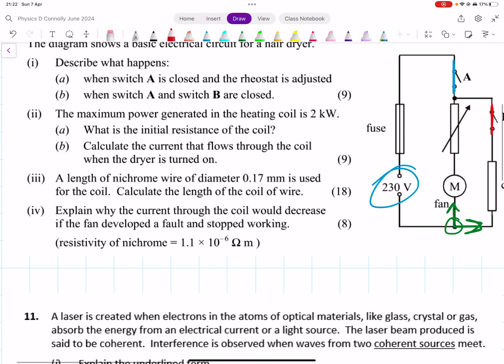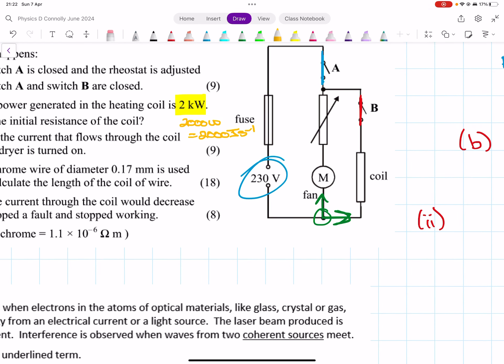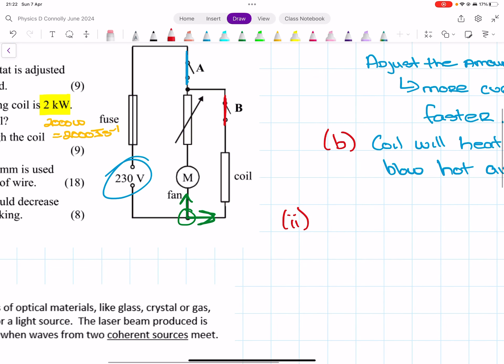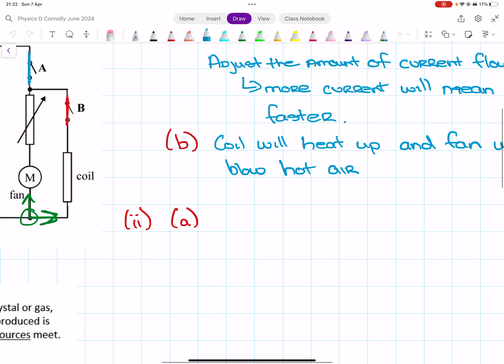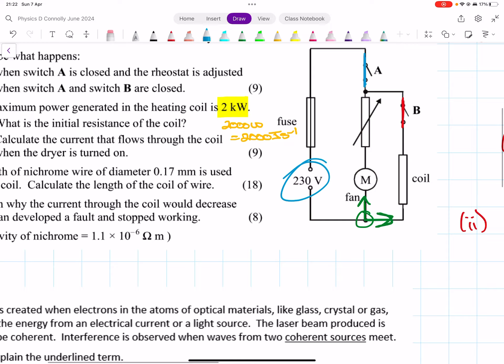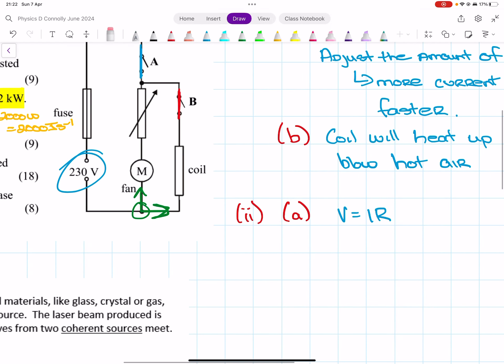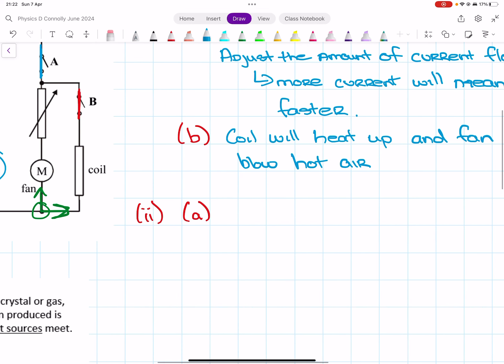The maximum power generated in the heating coil is two kilowatts. I'm just going to write 2000 watts, and in case I need it, that is 2000 joules per second. What is the initial resistance of the coil?